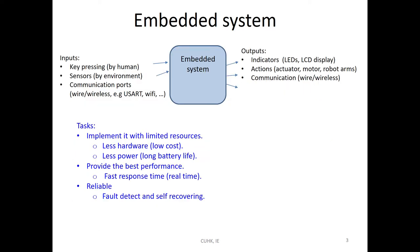Let us review the whole embedded system course. An embedded system normally has inputs and outputs. Inputs may come from a human, for example pressing a key, from the environment using a sensor, or communicated from another board. The result will indicate or update a display or LED, then maybe do some action like an actuator, robot arms, or communicate with another system.